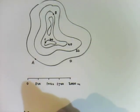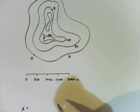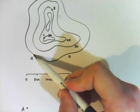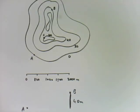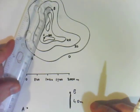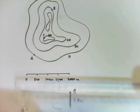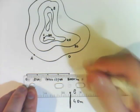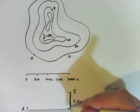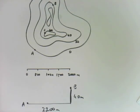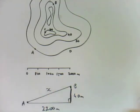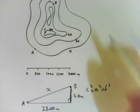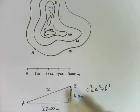Point A is here and point B is over here. It's uphill because A is on zero and B is on 40, so the vertical distance is 40 metres. Using the scale, the horizontal distance is about six and a half centimetres, which makes it about 2,200 metres. Because this forms a right-angle triangle, you would use Pythagoras to work out the straight-line distance between A and B.